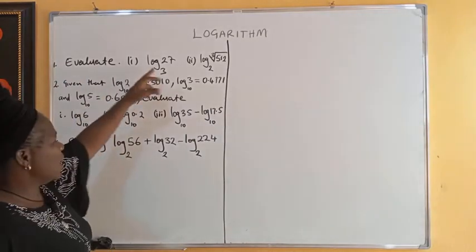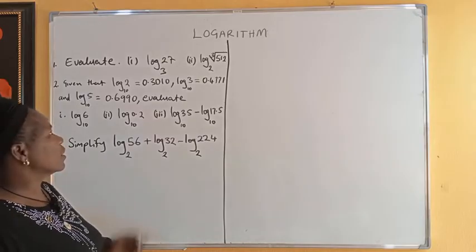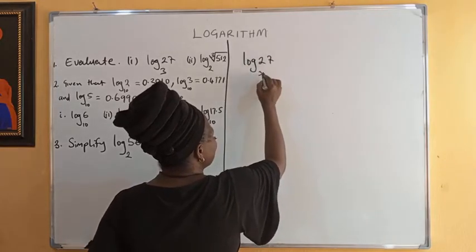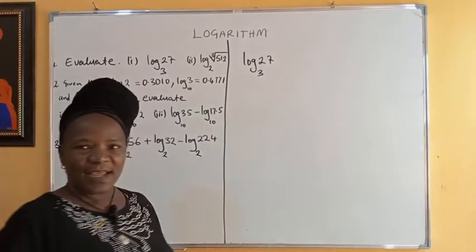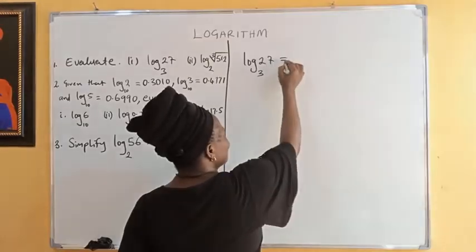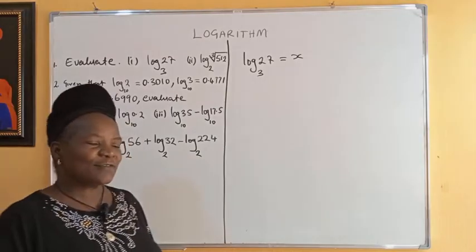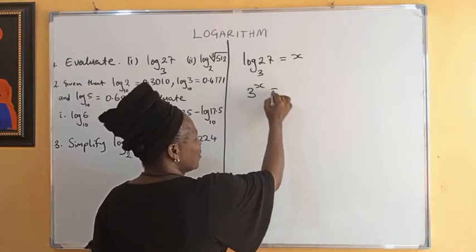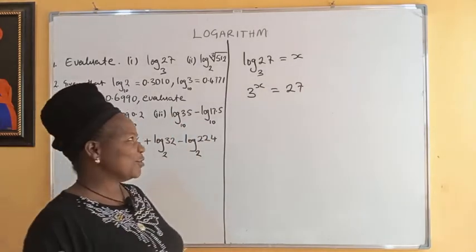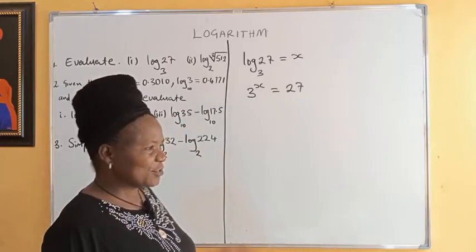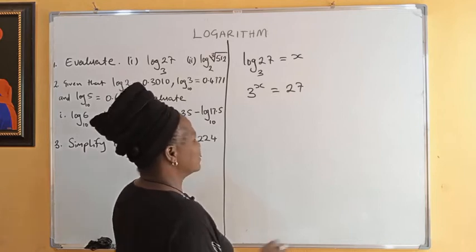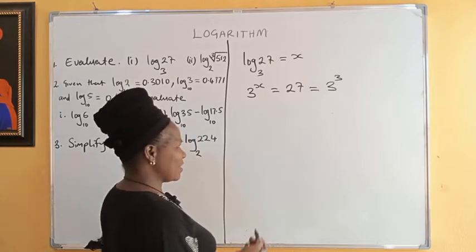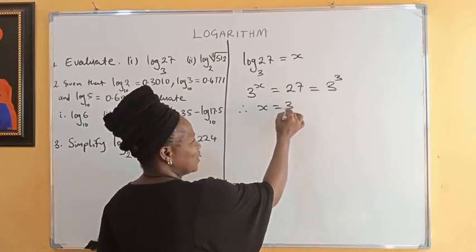Number one: evaluate log 27 in base 3. Let log 27 in base 3 be equal to x. From the definition of logarithms, this means that 3 raised to power x is equal to 27. This leads to an equation where we can make them have the same base, because 27 is 3 raised to power 3. So 3 raised to power x equals 3 raised to power 3, therefore x is equal to 3.